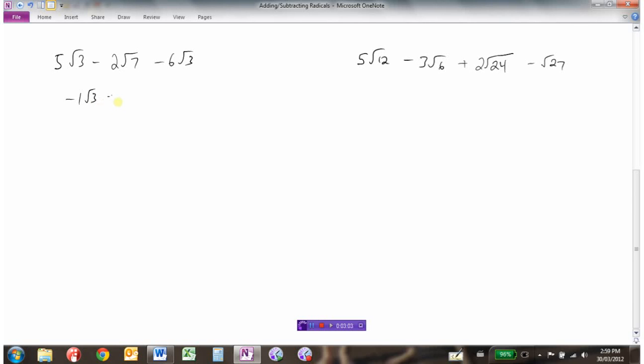And then this 2√7 is all by itself. So we get -1√3 - 2√7, or we could just write it as -√3 - 2√7 because we don't necessarily need to write the 1.